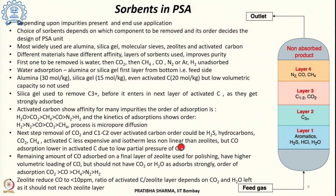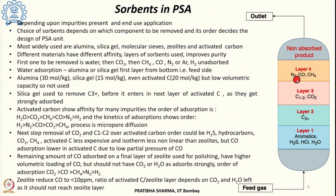The problem with activated carbon is it has a lower adsorption towards CO because CO has a lower partial pressure, so it can only partially remove CO. A final layer of zeolite is therefore required to remove the CO content. This is also known as a polishing layer, which adsorbs the remaining CO and has a higher volumetric loading for carbon monoxide.